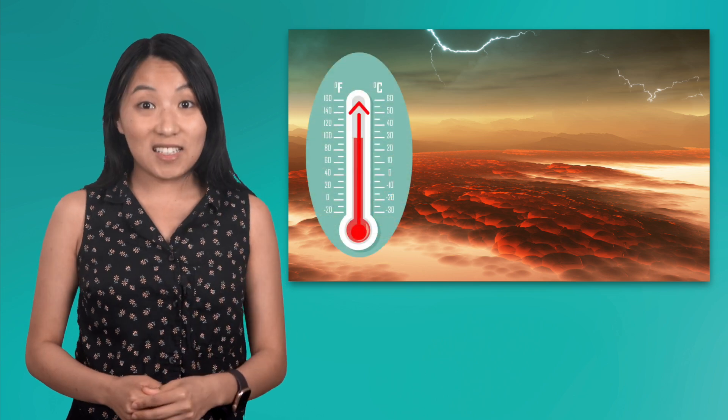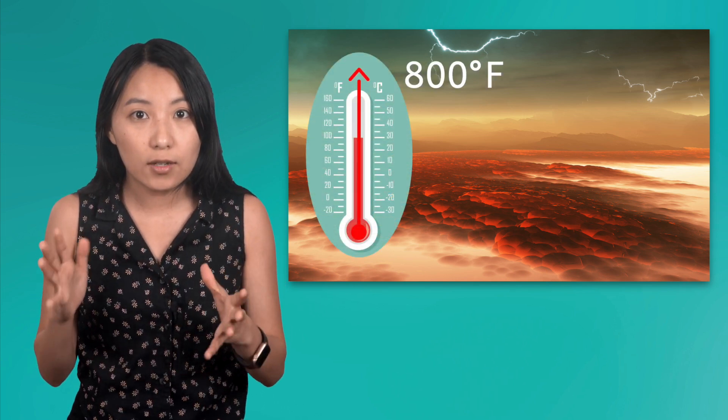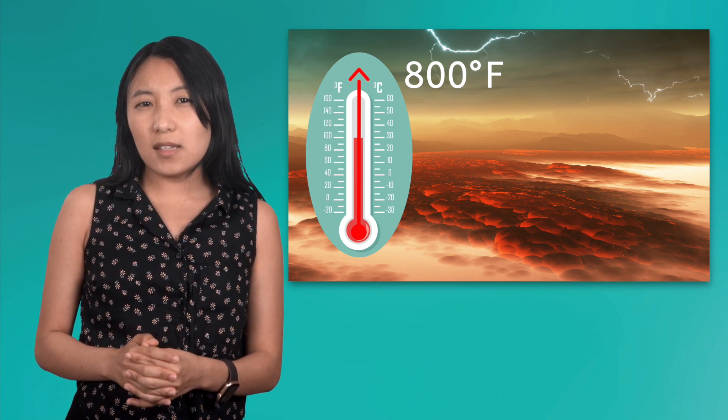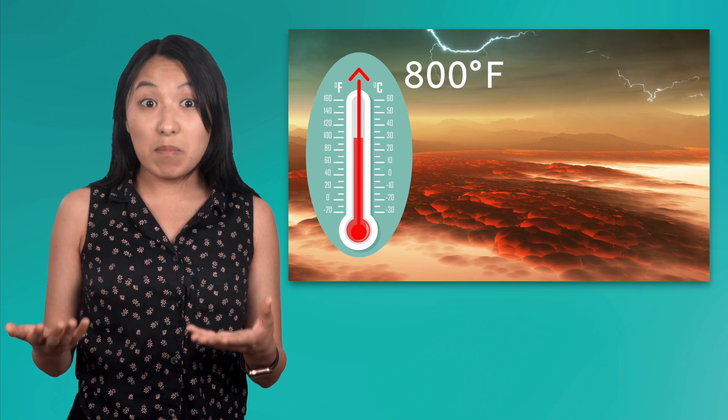Even though Mercury is closer to the Sun, Venus's thick atmosphere is what makes it the hottest planet. Missions to Venus have measured temperatures reaching 800 degrees Fahrenheit. But why does the thick atmosphere make the temperature so hot that it can melt lead?